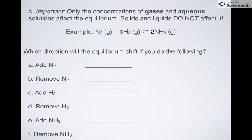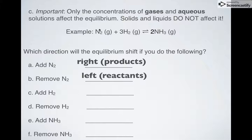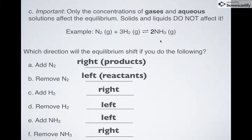Which direction is the equilibrium going to shift if I add more nitrogen gas? It's going to move to the right — it's going to get rid of this stuff, making more products to balance it out. What if I remove it? It's going to go to the left; it needs more nitrogen. What if I add more of a reactant? It's going to go to the right — you added more, so it needs to balance by making more product. What if I remove it? It's going to go to the left. What if you add more product? It's going to need to make more reactants to balance it out. And what if you remove product? It's going to go to the right to make more of what was taken away. That is how Le Chatelier's principle works.